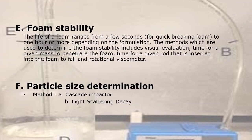Foam stability: the life of a foam ranges from a few seconds for quick-breaking foam to one hour or more depending on the formulation. Methods to determine foam stability include visual evaluation, time for a given mass to penetrate the foam, time for a given rod inserted into the foam to fall, and rotational viscometer. Particle size determination has two methods: cascade impactor and light scattering decay.